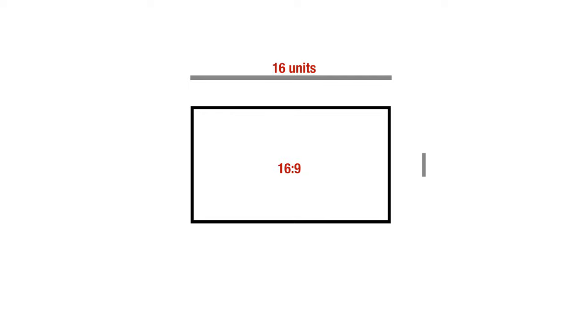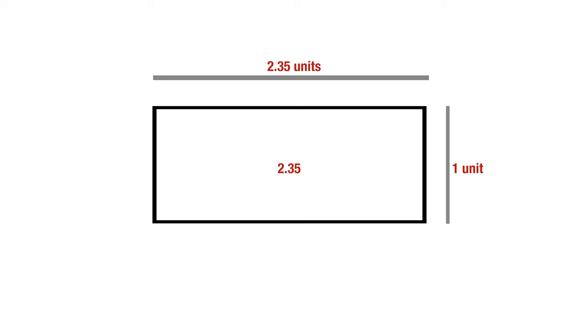An aspect ratio of 16 by 9 simply means that we have a picture with 16 horizontal units and 9 vertical units. An aspect ratio of 2.35 in decimal form simply means we have 2.35 horizontal units and 1 vertical unit. So every aspect ratio in decimal notation denotes a picture with a vertical height of 1 unit or 1 part.